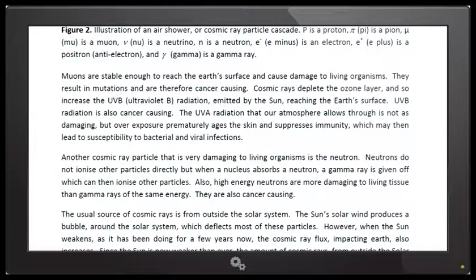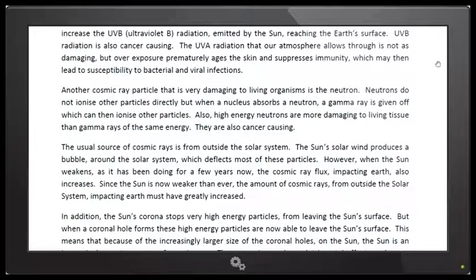UVB radiation is also cancer causing. The UVA radiation that our atmosphere allows through is not as damaging but overexposure prematurely ages the skin and suppresses the immunity which may then lead to susceptibility to bacterial and viral infections. Another cosmic ray particle that is very damaging to living organisms is the neutrons. Neutrons do not ionize other particles directly but when a nucleus absorbs a neutron a gamma ray is given off which can then ionize other particles. Also, high energy neutrons are more damaging to living tissue than gamma rays of the same energy. They are also cancer causing.